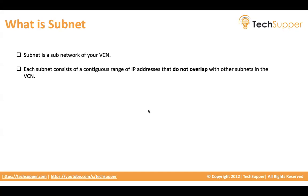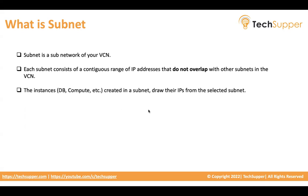Each subnet consists of a contiguous range of IP addresses. For example, if you have a range like 10.1.0.0/24, the IPs will be 10.0.0.1, 2, 3, 4, 5 — that is called a contiguous range. This range does not overlap with other subnets, because when you create subnets within a VCN, the CIDR ranges of two different subnets cannot overlap.